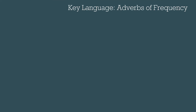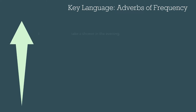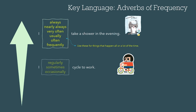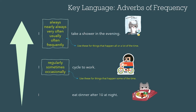Here's a rundown on adverbs of frequency. This list shows the most frequent adverbs to the least frequent adverbs. You can see here: always, nearly always, very often, usually, often, frequently. We use these for things that happen all the time or a lot of the time.